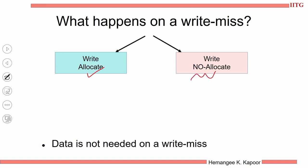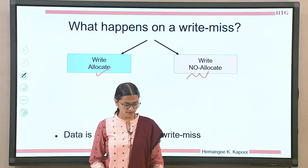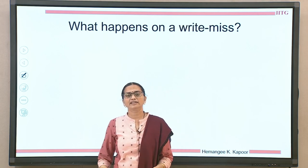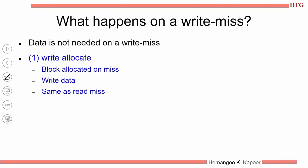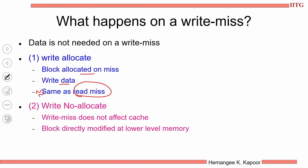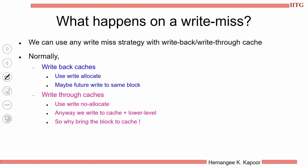The first option — bring the block first and then update it — is called write allocate. The second option — do not bring the block but simply go to the next level and update the block there — is called write no allocate. No allocate means you do not allocate space for that block and simply go to the next level to change it, because we do not need the data when we have a write miss. In write allocate, the block is allocated on the miss — you bring the block, allocate it in the cache, update the data — and therefore it is similar to a read miss. In write no allocate, the cache contents do not change; we directly update the lower level of memory.